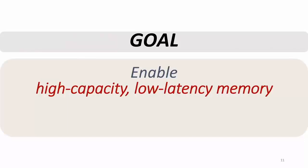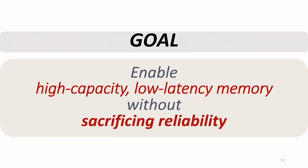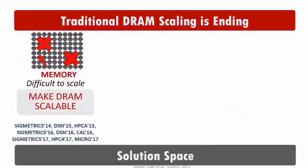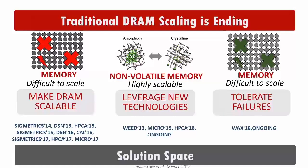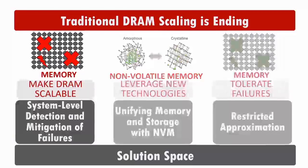The goal of my work is to enable high-capacity, low-latency memory without sacrificing reliability. How can we achieve that? We can try to make DRAM scalable. We should also try to leverage new technologies predicted to be more scalable because they don't rely on capacitors. We should also look at applications where we can tolerate more failures. But in this talk I will mainly discuss how we can make DRAM scalable using system-level detection and mitigation techniques.